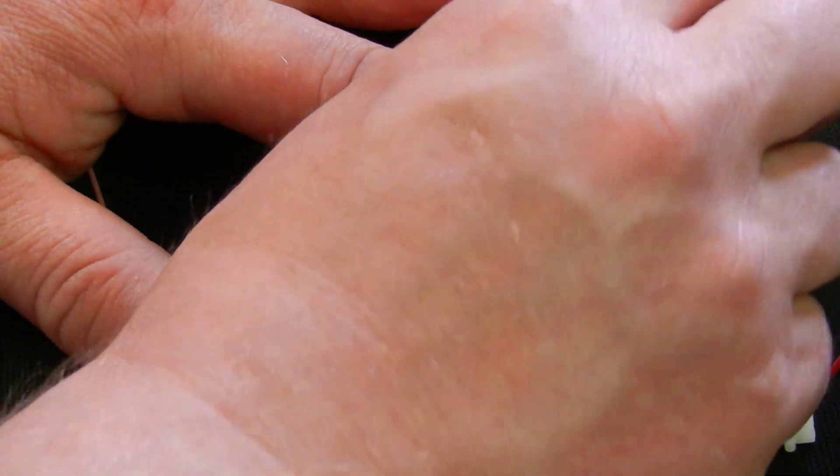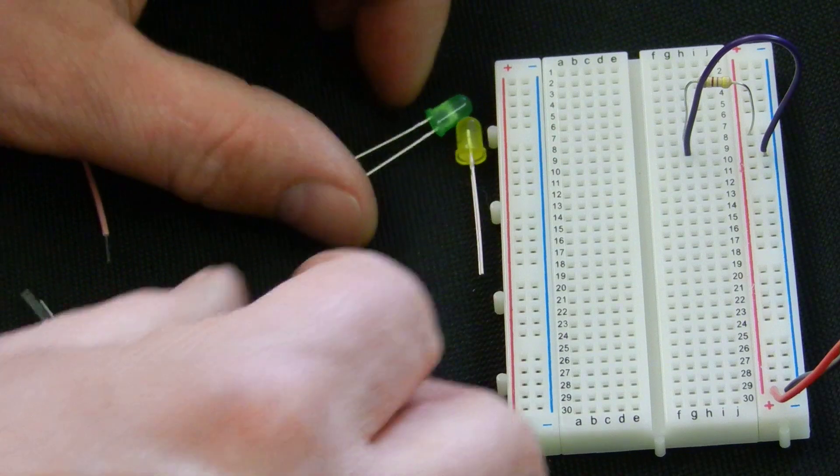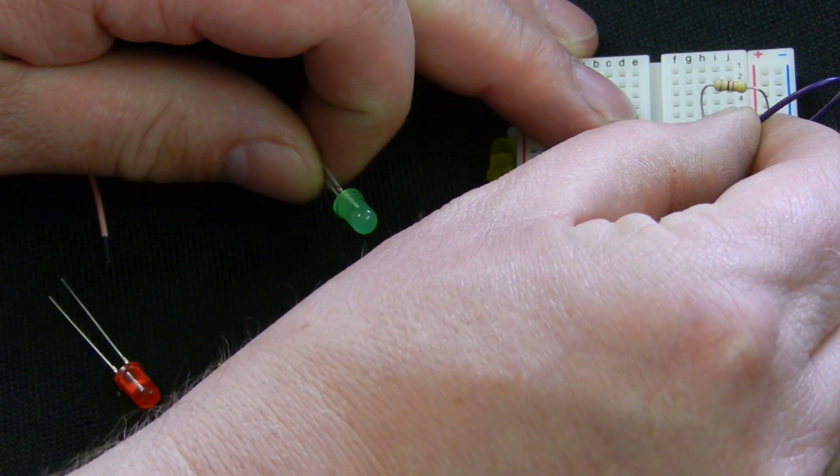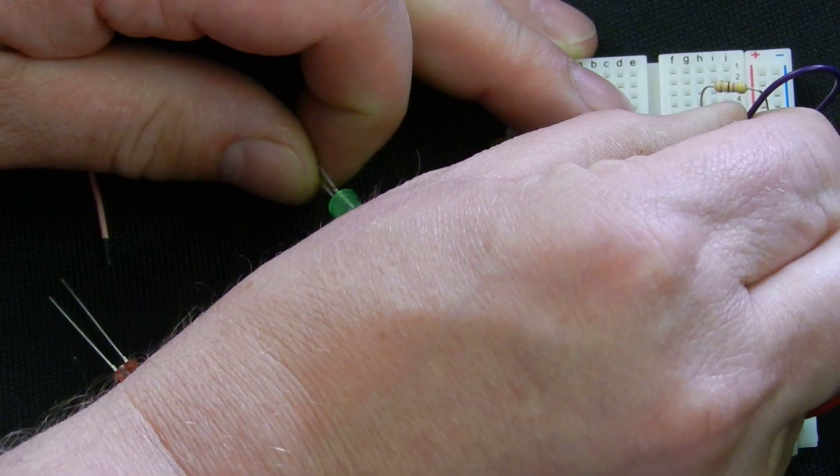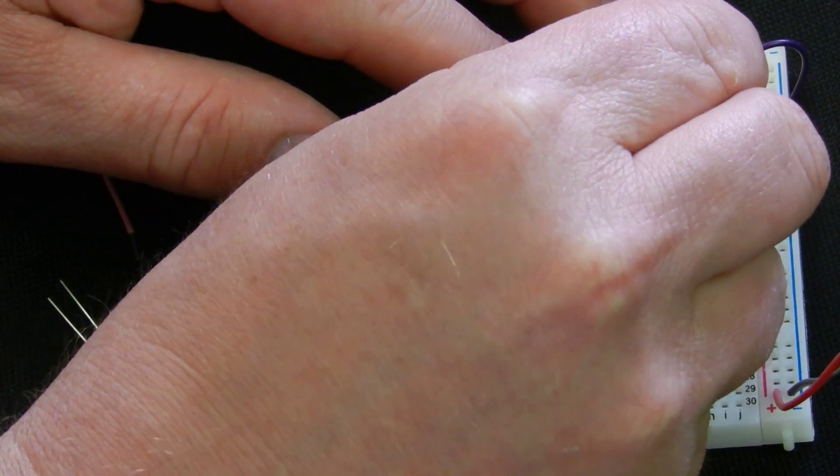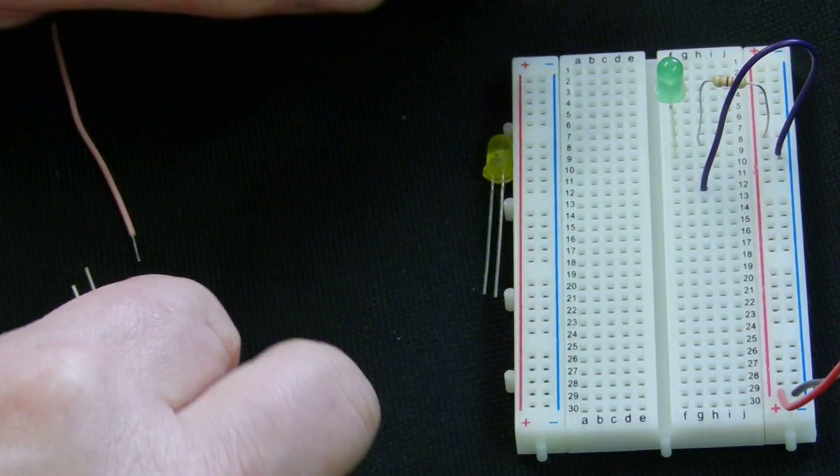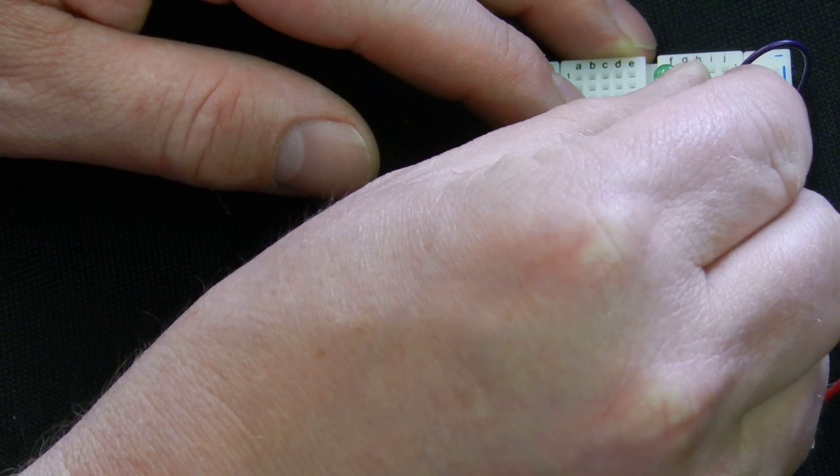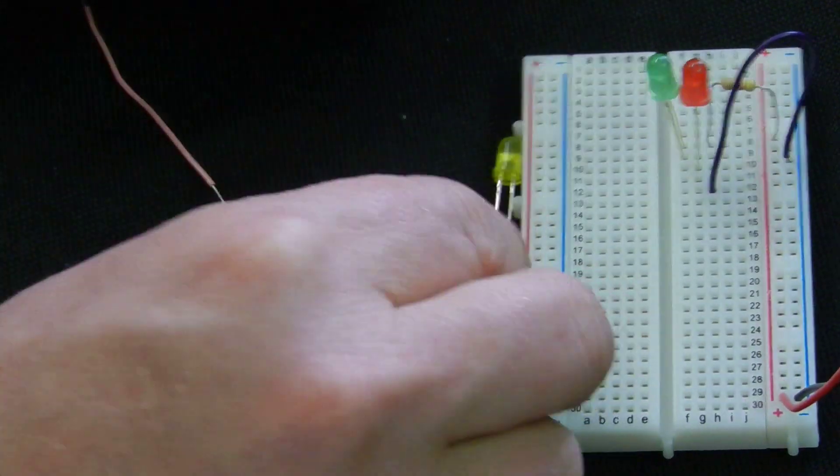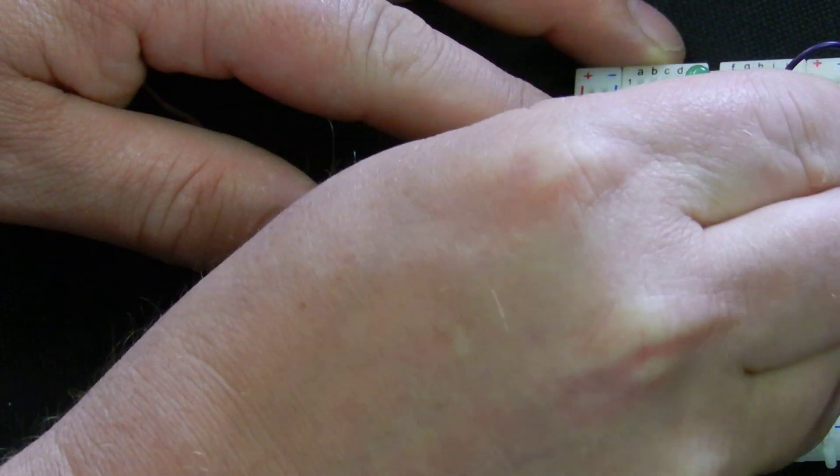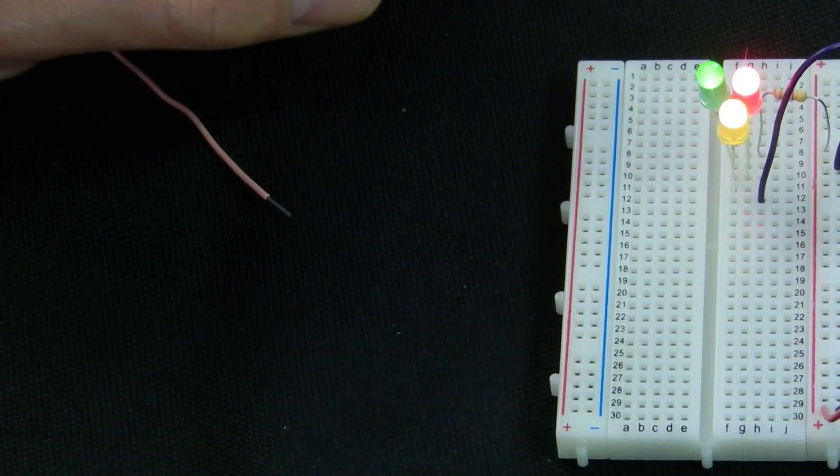We can make it a little bit more complicated. We could have two and what we will do there is we will move the negative link down just to give us some room. We will pop the green LED in, the red LED in and then complete the circuit with the yellow LED. And all three light.